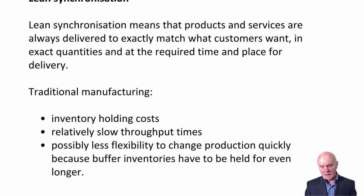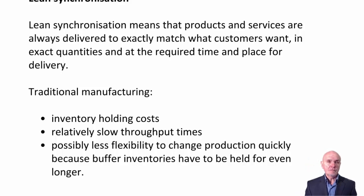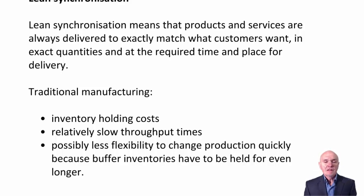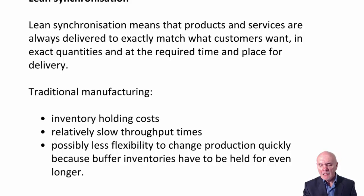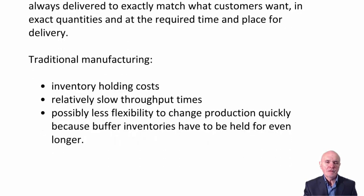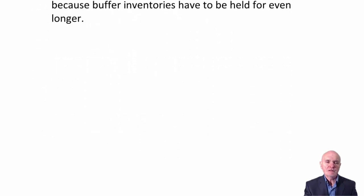The old form of supply chain management had less flexibility to change production quickly, because buffer inventories had to be held for even longer. So there was a lot of inventory, a lot of buffer inventories, with large batches being made, and organizations were not very responsive to customers' requirements.